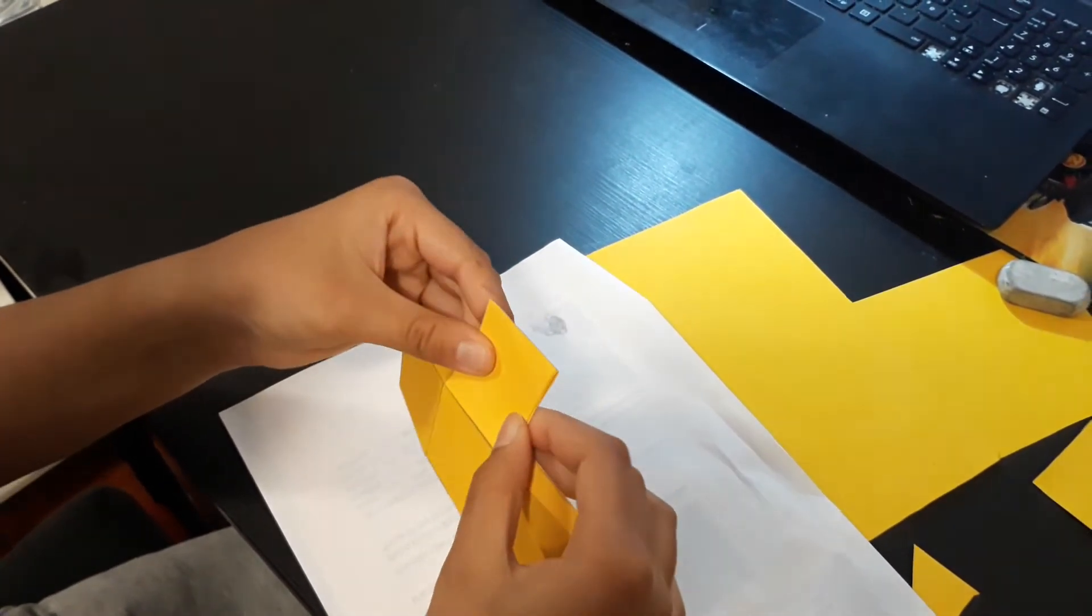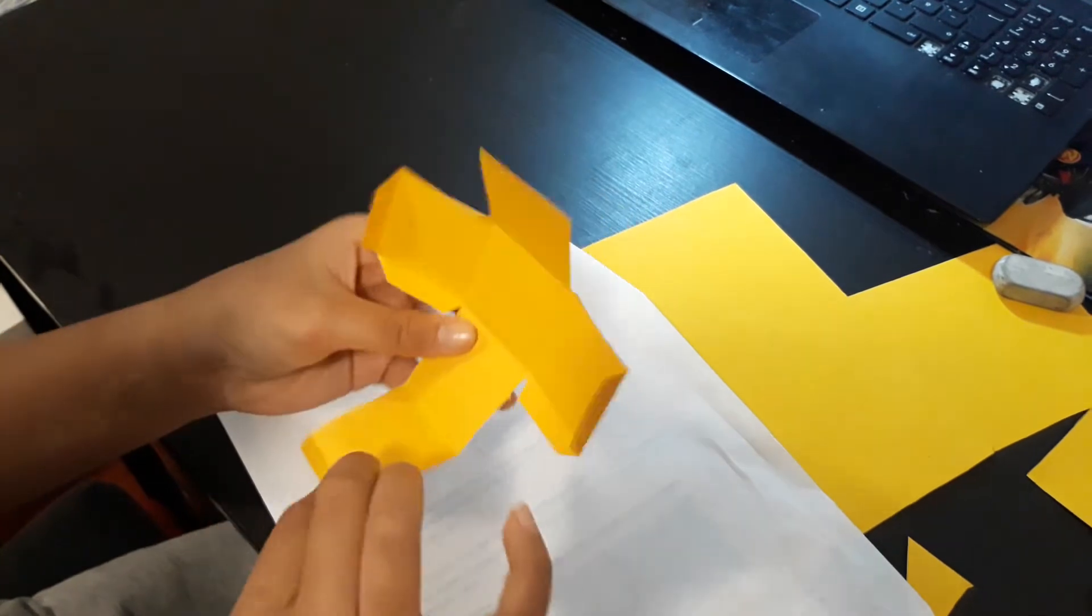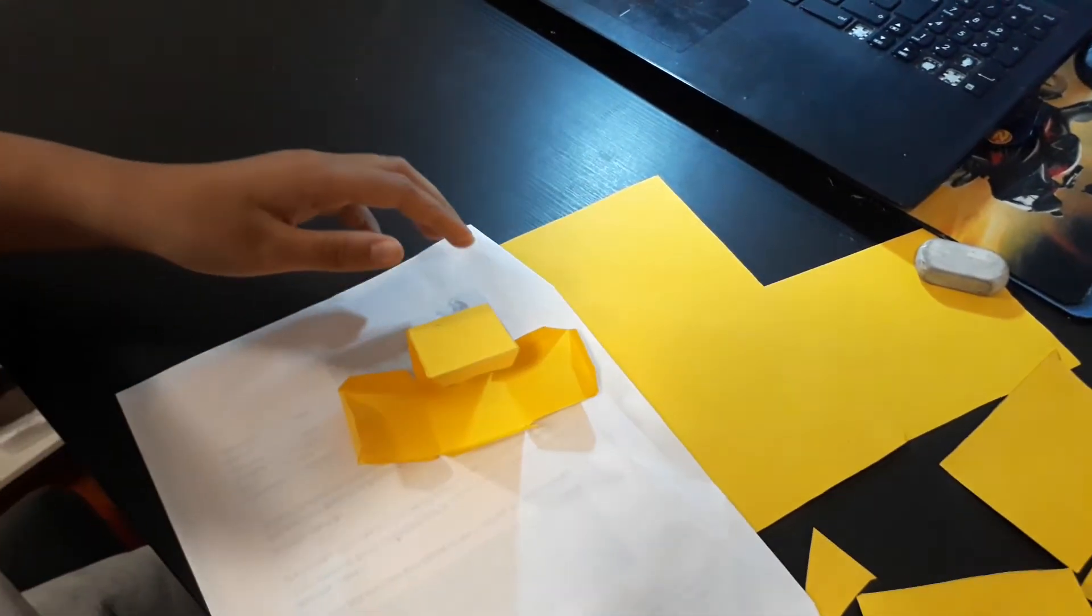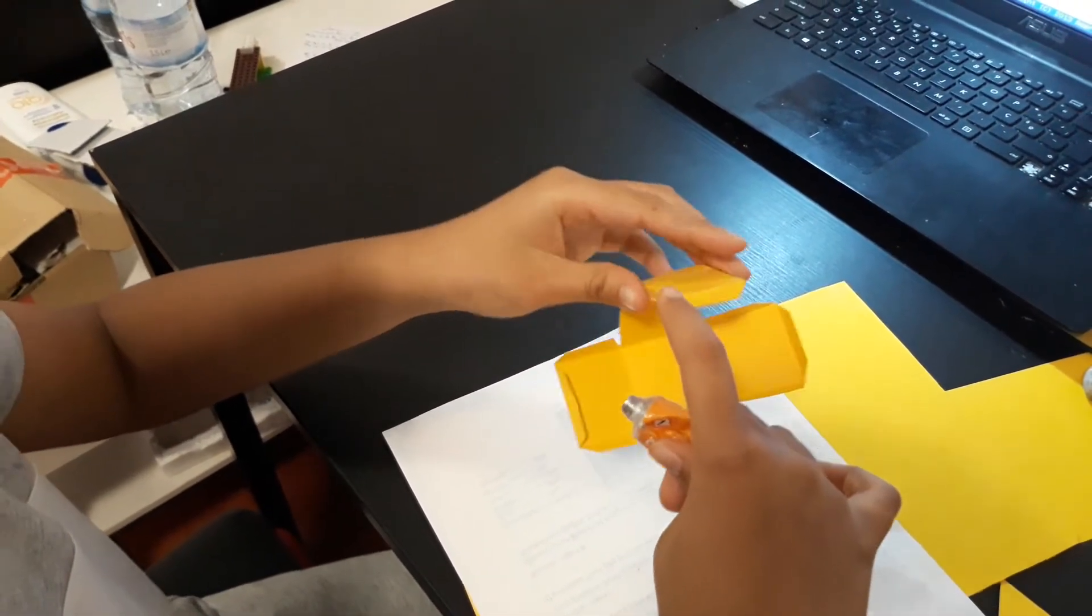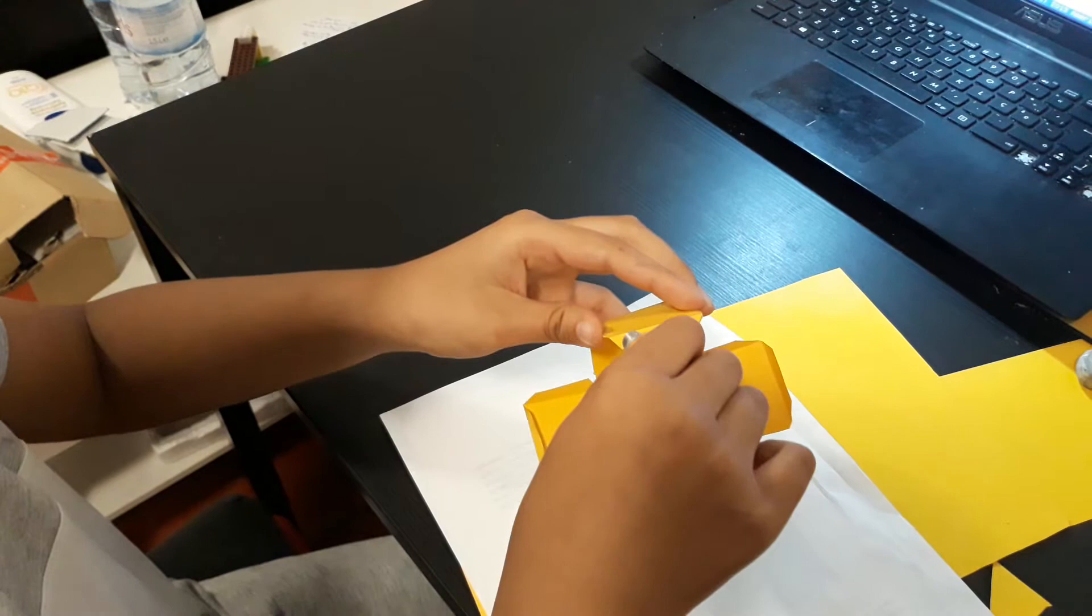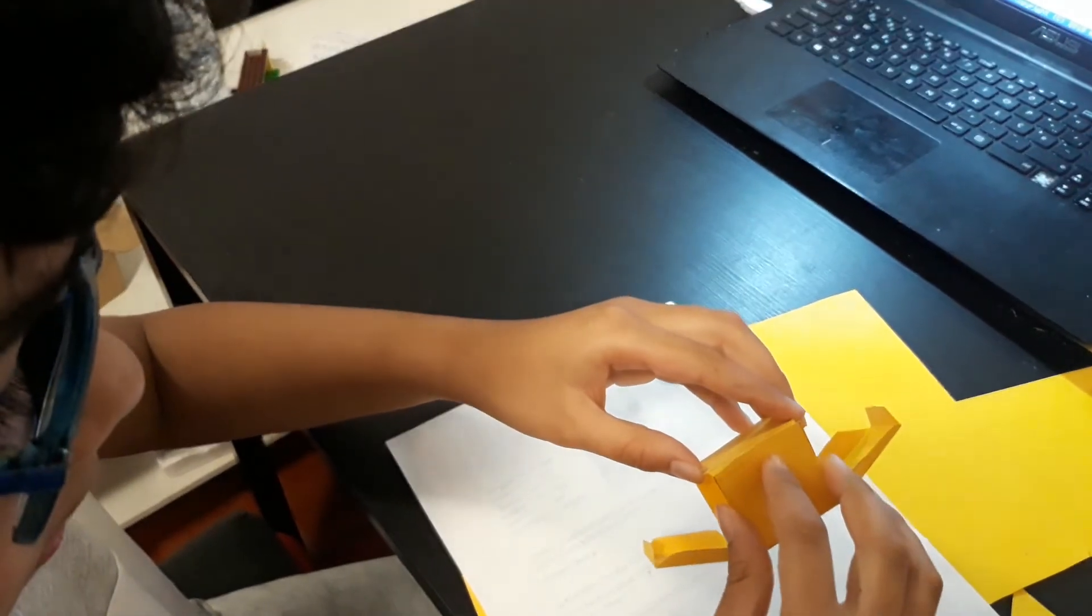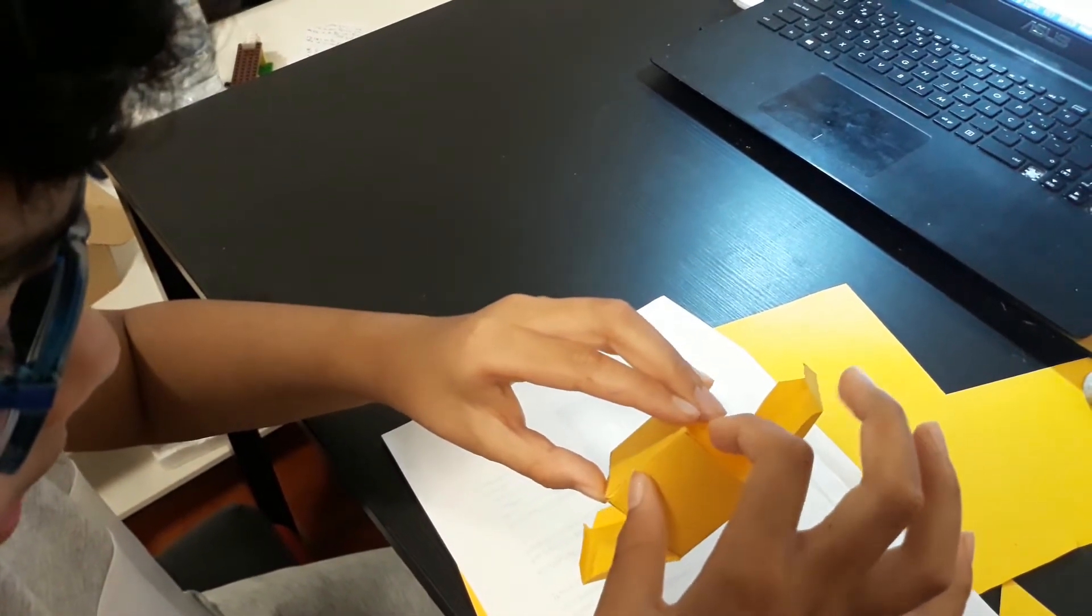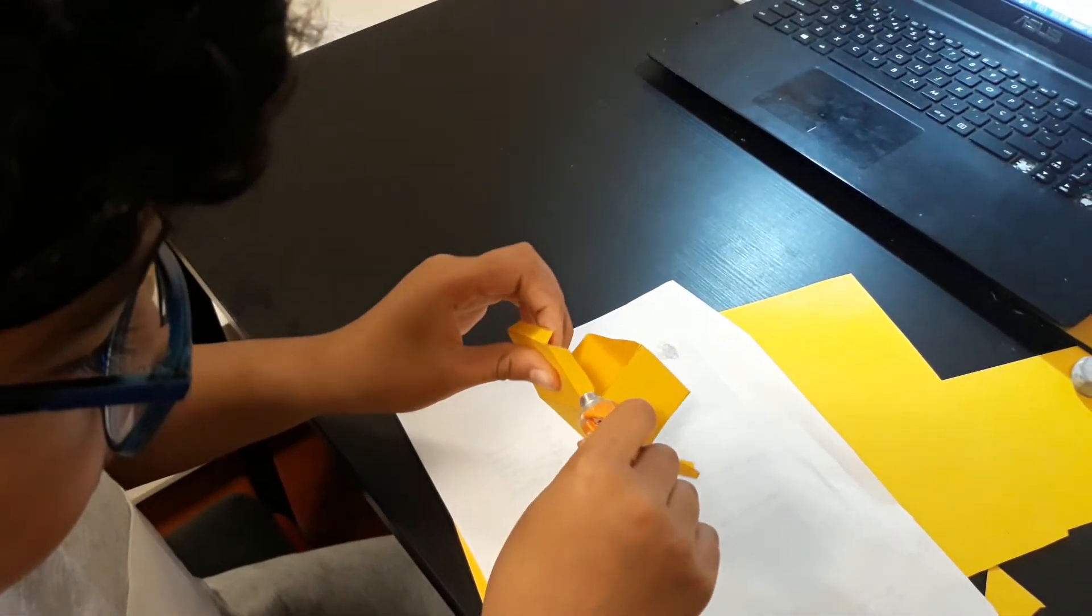And so when we are finished with the folding, we need glue. Now we have to put the glue on the shapes that we made, not on the squares but on the shape. So this part will go here, and on the shapes here, here, here.